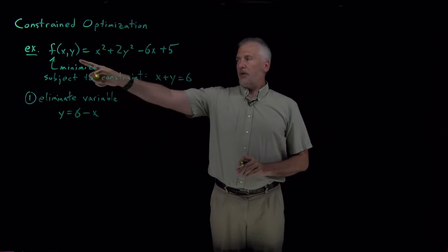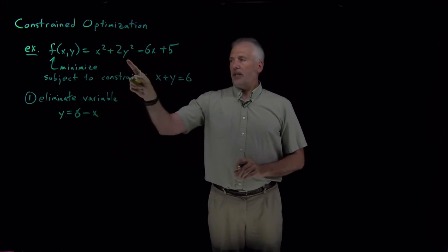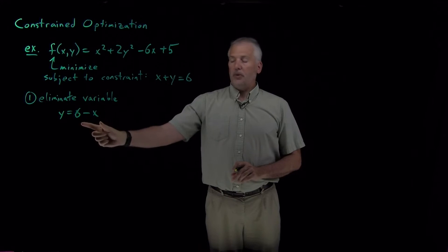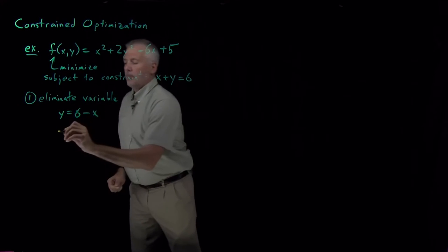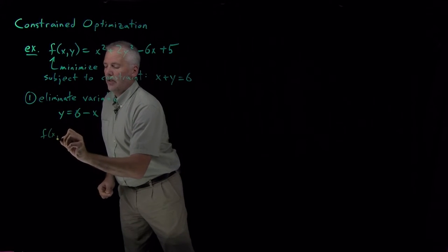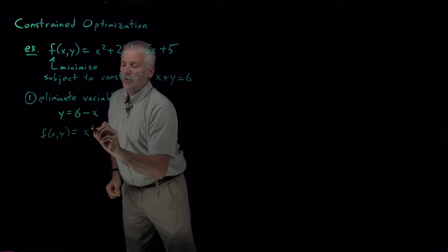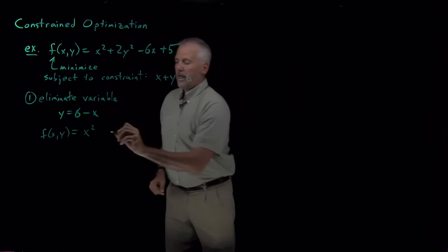So this function of x and y, everywhere I see a y, I can insert this constraint equation. So plug that into my original equation: x² + 2y²...